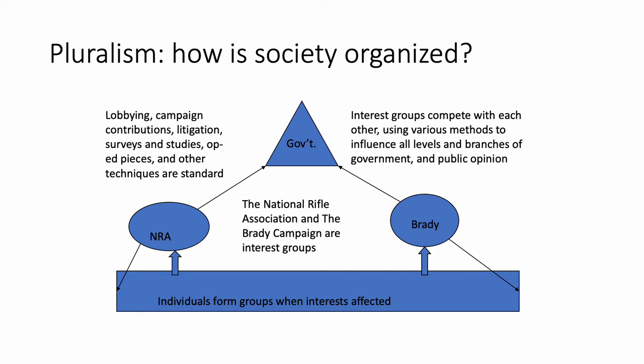For example, the NRA and the Brady Campaign compete with each other through lobbying, campaign contributions, litigation — everything they can think of to win in their issue area. The NRA tries to block gun control legislation; the Brady Campaign tries to advance it. The Sierra Club tries to advance energy conservation legislation; the oil industry lobbies try to block it. The argument is that pluralism is an answer to elite theorists.